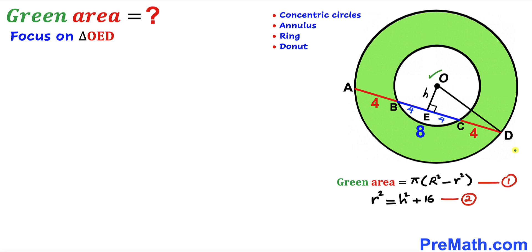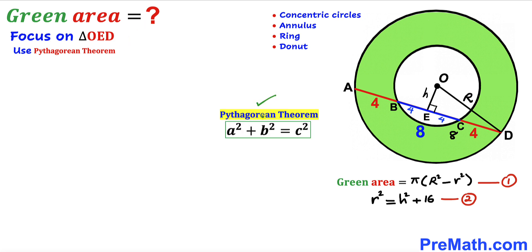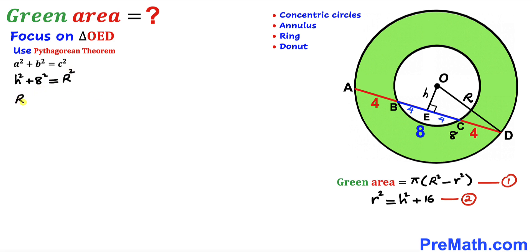Now I connect center O with point D, giving us right triangle OED. OD is the radius of the larger circle, labeled uppercase R. The length ED is 4 + 4 = 8 units. Applying the Pythagorean theorem: h² + 8² = R², which simplifies to R² = h² + 64. Let's label this as equation number 3.